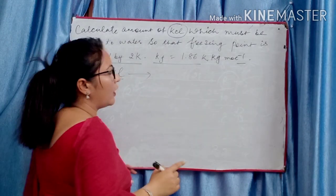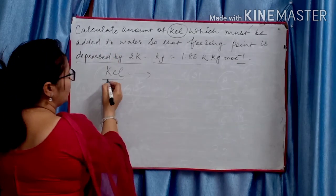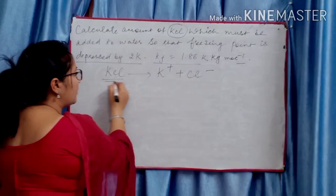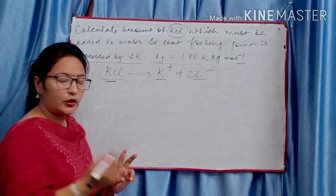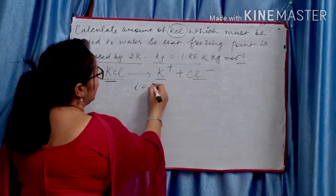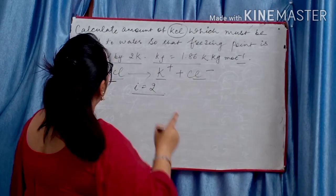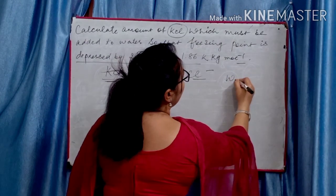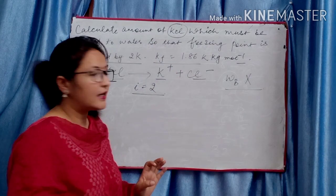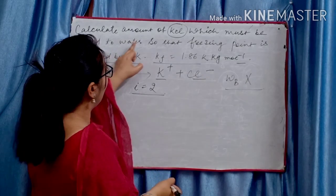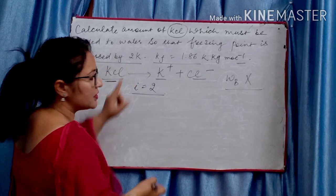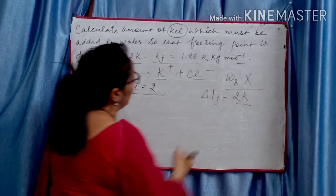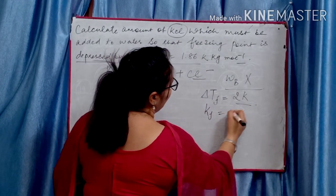As covered in the Van't Hoff factor theory, KCl dissociates as K⁺ and Cl⁻. If 1 mole is added, each gives 1 ion, so i = 2. Now, calculate amount of KCl means WB is unknown. Delta TF is given as 2 Kelvin and Kf is given as 1.86.